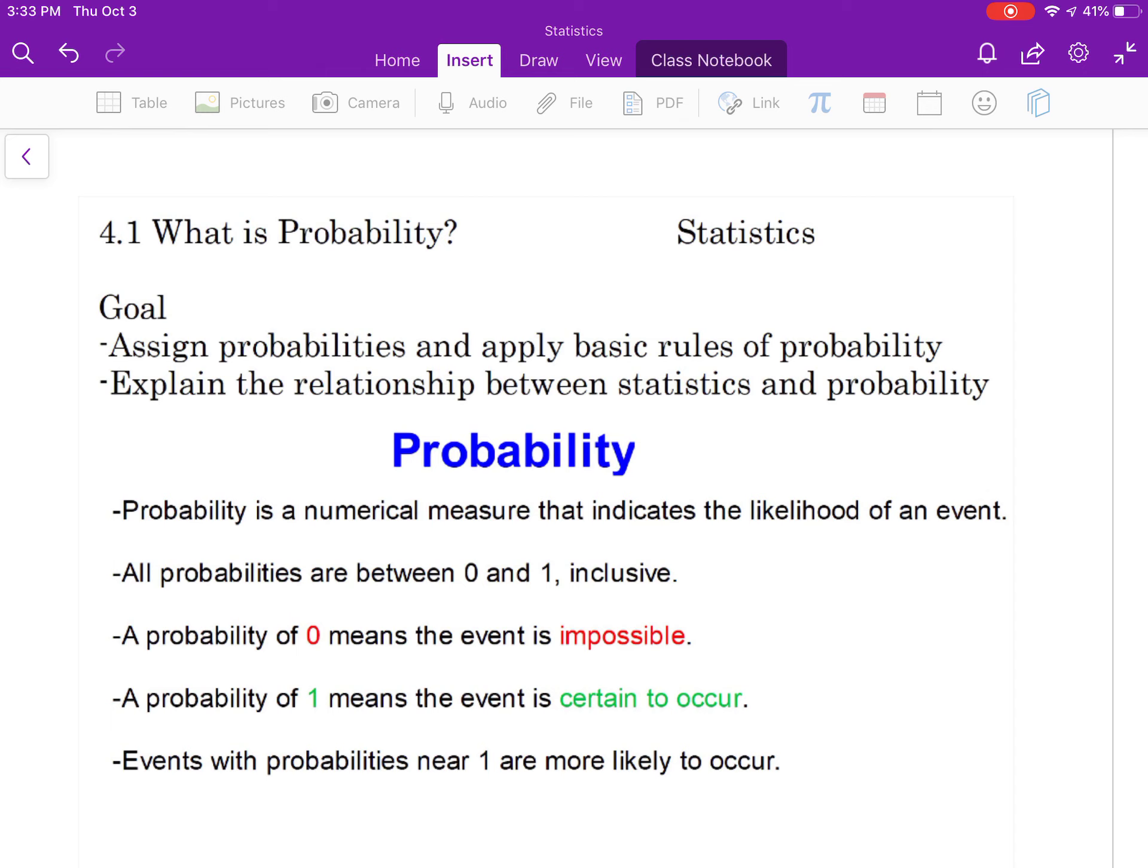If you're talking about percentages, the lowest percent would be 0% and the highest percent would be 100%. If events occur near 1, then they're more likely to occur.